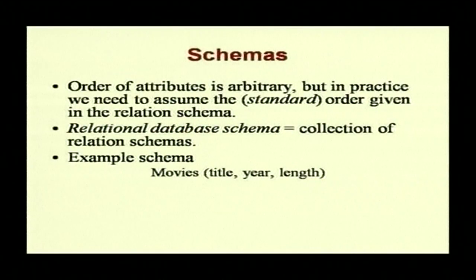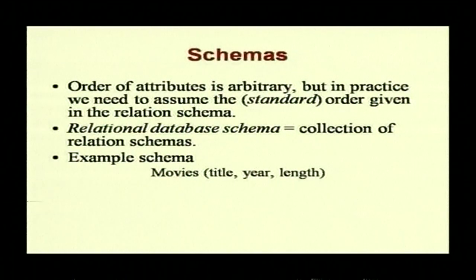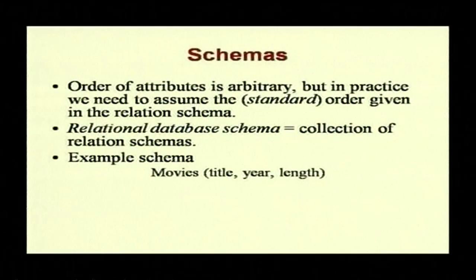The relation schema is the name of the relation, attributes, and other information like keys and constraints. The order of attributes is arbitrary, but in practice we assume the order given in the relation schema because that is how it is stored. The relational database schema is the collection of all relation schemas. An example schema for movies would be: movies(title, year, length) — here the domains have not been specified.